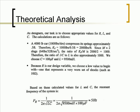As designers, our task is to choose appropriate values of R, L, and C. The calculations are as follows. A 4,000-pound car compresses its spring approximately 0.5 feet. Therefore, Ks equals 1,000 pounds divided by 0.5 feet, which equals 2,000 pounds per foot. Since M equals 2 slugs, the ratio of Ks divided by M is 2,000 divided by 2, equaling 1,000. Therefore, the ratio of 1 divided by LC to L is also approximately 1,000. We choose C of 100 microfarads and an L of 9,500 millihenrys.